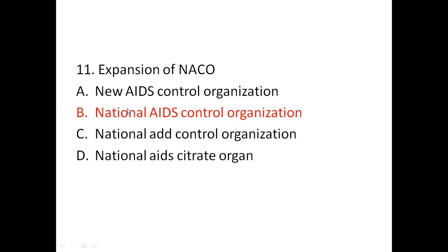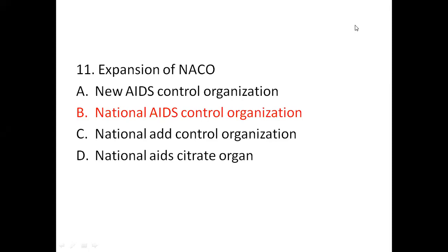Eleventh question: expansion of NACO. Options are new AIDS control organization, national AIDS control organization, national ad control organization, or national AIDS citrate organ. The answer is national AIDS control organization. NACO is the nodal organization for national AIDS response in the Ministry of Health and Family Welfare. The national AIDS control program is a fully funded central sector scheme implemented through state and UT AIDS control societies, and closely monitored through district AIDS prevention and control units.